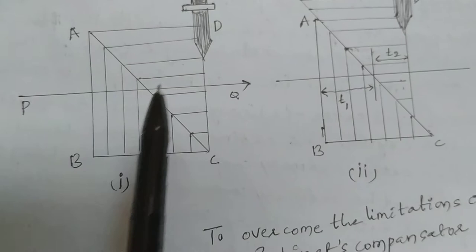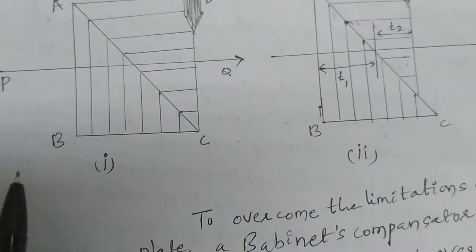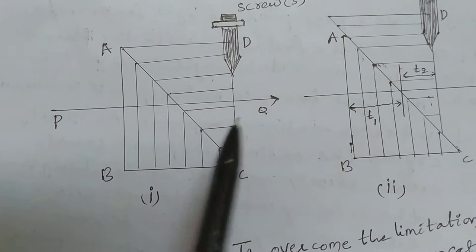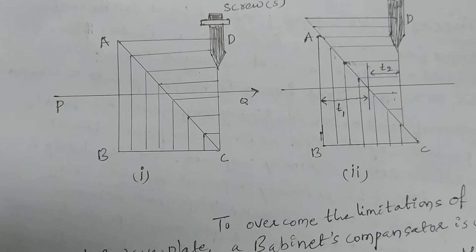Both the optic axes of the wedges are perpendicular to each other. One of the wedges is fixed while the other can be moved with the help of a micrometer screw. PQ is the light ray which passes through the Babinet compensator. Now we shall discuss the working of the Babinet compensator.